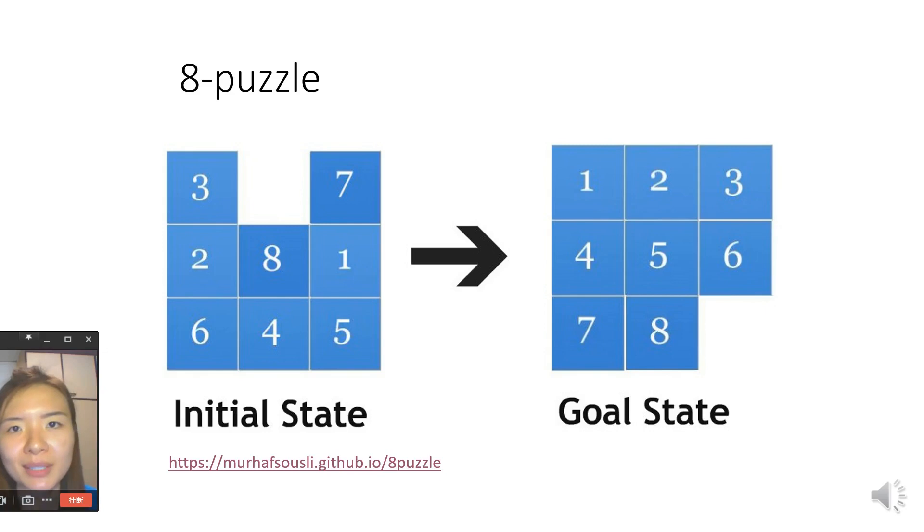An 8 puzzle consists of 3x3 grids containing eight squares and one of them is empty. The objective of this game is to swap this empty square around so that you can reach this goal state. By following this link you can have a view on this game.